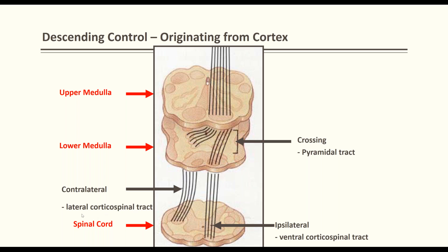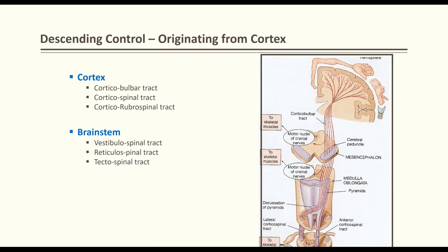The 80% that cross over remain in the lateral corticospinal tract. The corticospinal tract has two divisions: the lateral, which is the crossed tract, and the anterior (ventral) corticospinal tract, which remains ipsilateral but crosses at the segmental level. The 20% of fibers that remain ipsilateral cross over at each segment — C1, C2, C3, down to the sacral roots. Descending tracts are cortical tracts originating from the cortex.